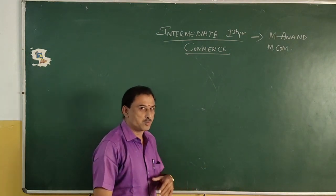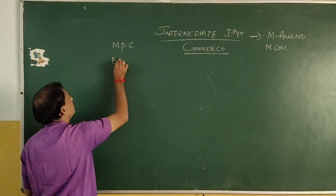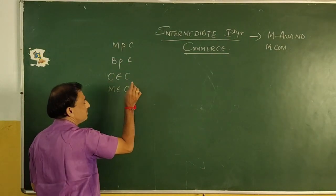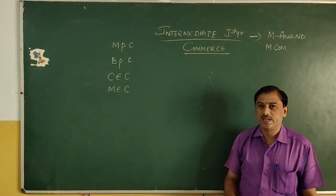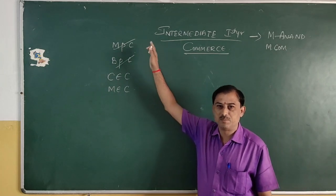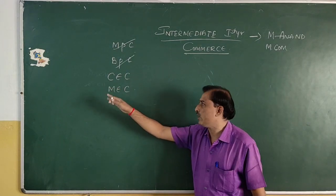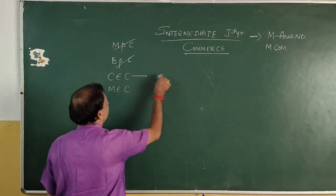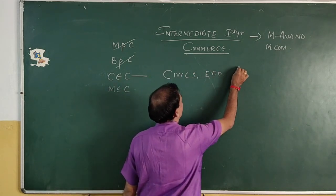We have 4 groups mainly in Intermediate: MPC, YPC, CEC, and MEC. For the 11th and 12th standards, MPC and YPC cover the science groups or science subjects. We are going to deal with the other 2 groups — CEC and MEC. CEC stands for Civics, Economics, and Commerce.